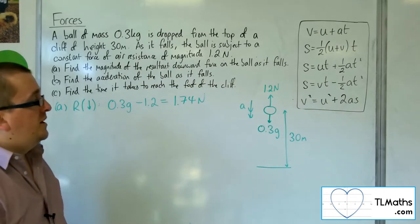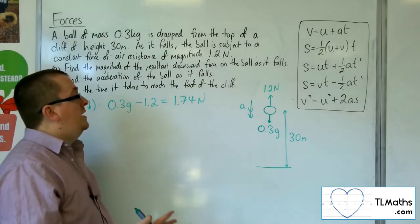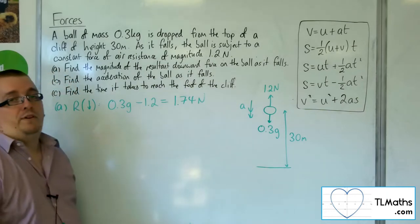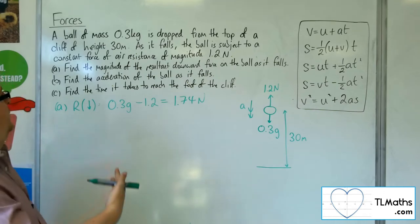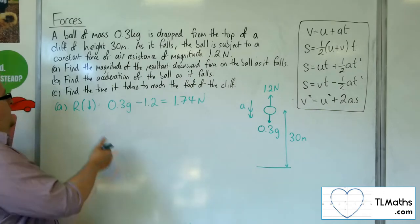If you'd taken upwards as positive and you'd just done 1.2 take away 0.3g, you would have got minus 1.74. So you would have just had to make sure that you used the positive as your answer.